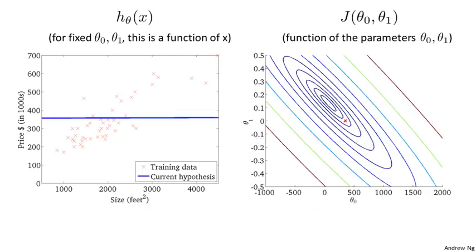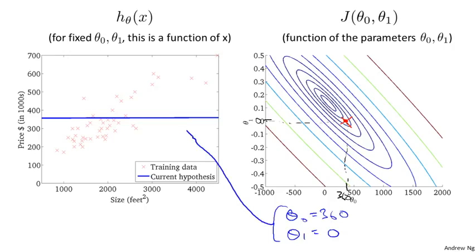Here's a different hypothesis that's still not a great fit but maybe slightly better. That point gives parameters theta 0 equal to about 360 and theta 1 equal to 0. This pair of parameters corresponds to a flat line — h of x equals 360 plus 0 times x. This hypothesis again has some cost, plotted as the height of the j function at that point.